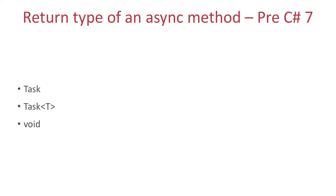Let's discuss what was possible to return from an async method before C# 7. Basically, once you marked a method with the async keyword, you had 3 choices: either you returned a Task in case you were not interested in the return value, or you returned Task<T> where T was the type of the return value, or you returned void — which was mainly allowed for backwards compatibility, for example for events.